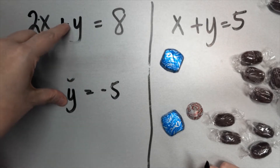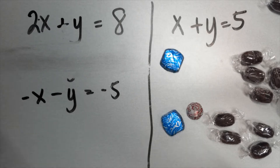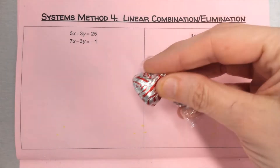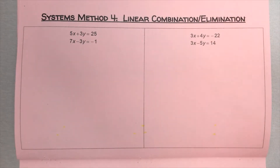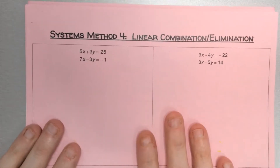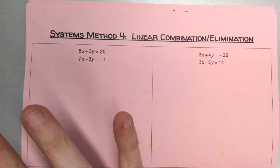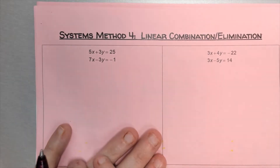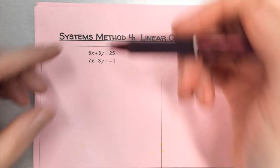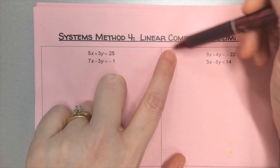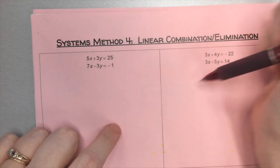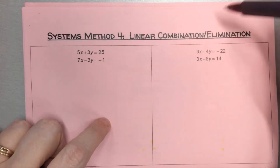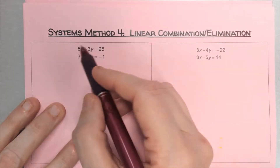So linear combination works by finding or creating a zero pair and eliminating one variable. The method is called linear combination elimination: the combination part is where we add the two rows together, and the elimination part is where we eliminate one variable. Practically all systems methods depend on eliminating something.